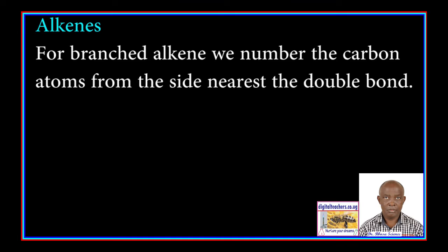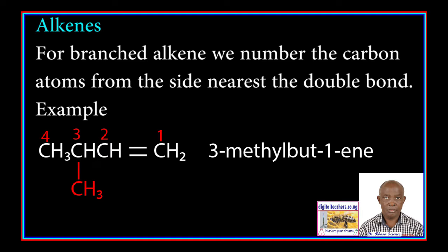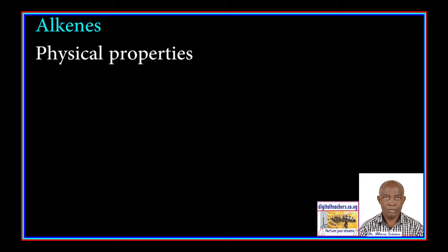For branched alkenes, we number the carbon atom from the side nearest the double bond. For example, the compound below is 2-methylbut-1-ene. The methyl group is attached to carbon 2 of but-1-ene. Between a number and a letter, we put a dash.